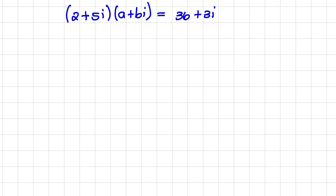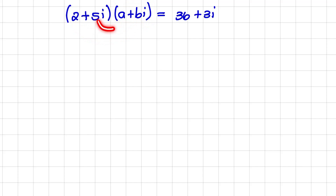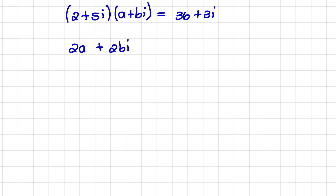In order to find the values of a and b, we need to multiply out as we would normally do in algebra. That leads to 2a + 2bi + 5ai + 5bi² = 36 + 3i.